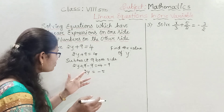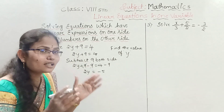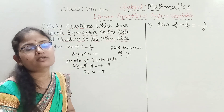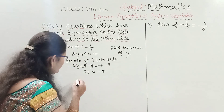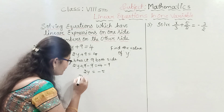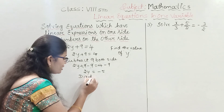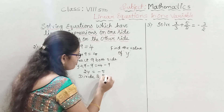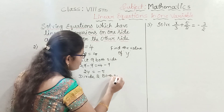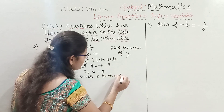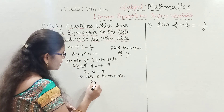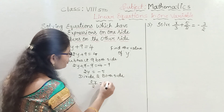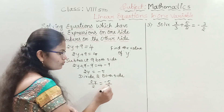With y, there is another number: 2. The relationship between 2 and y is multiplication. The reverse process of multiplication is division. So we divide both sides by 2: 2y divided by 2 equals minus 5 divided by 2.